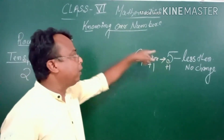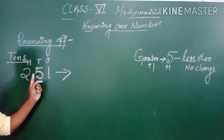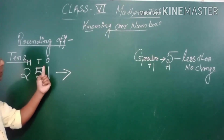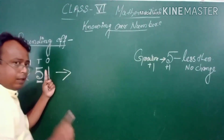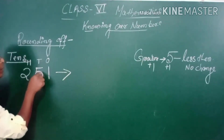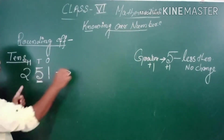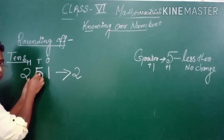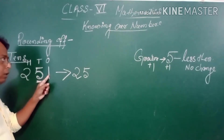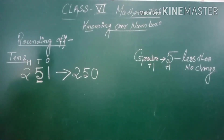If the next digit is 5 or greater than 5, we add 1 to the tens digit. Here, the next digit is 1 — less than 5 — so no change. We keep 2 as it is, keep 5 as it is, and the units digit becomes 0. So 251 rounded to nearest 10 is 250.